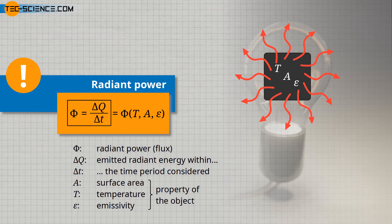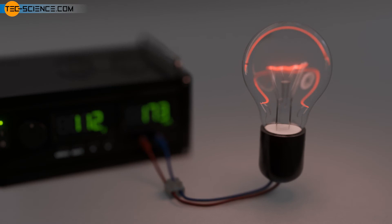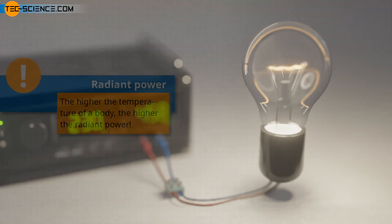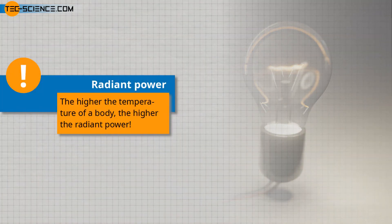If, for example, an incandescent light bulb is operated at low current, the temperature of the filament is correspondingly low. The light bulb does not only glow less, but it also does not heat up as much. Overall, the radiant power is relatively low at low temperatures. With a large current, on the other hand, the filament heats up strongly and the temperature is high. It then not only glows intensely yellow, but also radiates infrared radiation to a high degree, which is clearly noticeable as heat. The higher the temperature of a body, the higher the radiant power is.